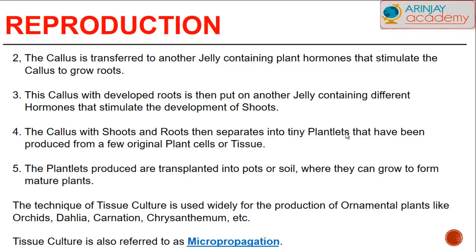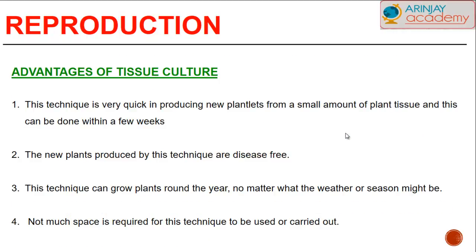The technique of tissue culture is widely used for the production of ornamental plants like orchids, azalea, carnation, and chrysanthemum. Tissue culture is also referred to as micropropagation. Its advantages include: it is very quick, producing new plantlets from a small amount of plant tissue within a few weeks; the new plants produced are disease-free; the technique can grow plants all year round regardless of weather or season; and not much space is required.